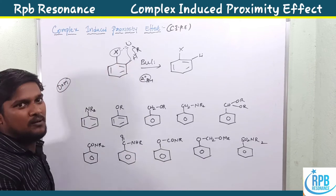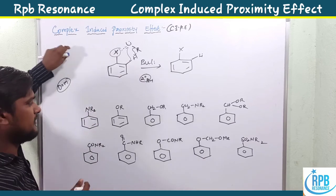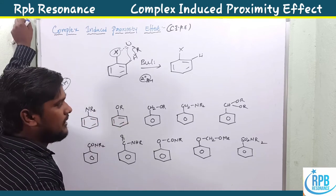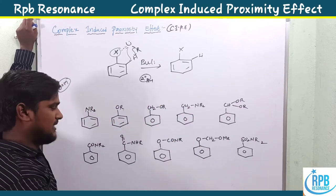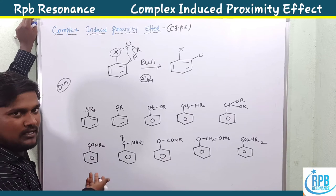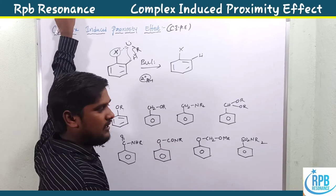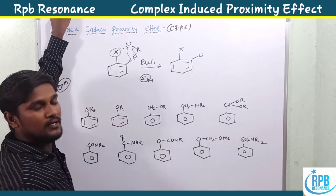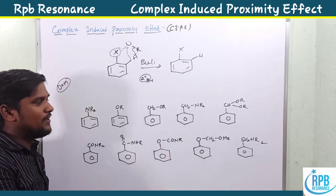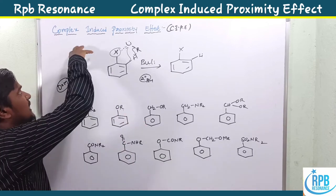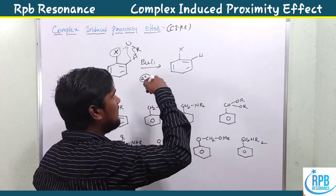To repeat: organolithium reagents will abstract the proton from the ortho position of aryl compounds which have some X group. Those X groups include NR₂, OR, CH₂OR, CH₂NR₂, CHO, O-methyl, CONRu₂, NHR, monoalkyl amide functionality, OCONRu, CH₂O-methyl, and SO₂NR — sulfonamide groups also. These X groups can easily exhibit the Complex Induced Proximity Effect.